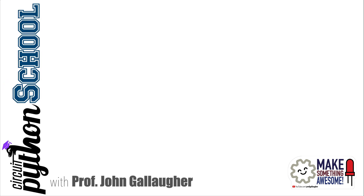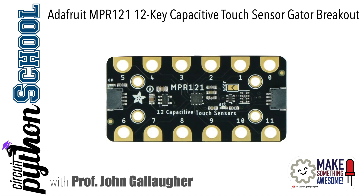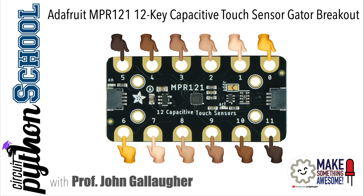Python pals, this is Prof G, and I'm touched that you continue to watch our CircuitPython School videos, which is appropriate because we're about to work with capacitive touch using the Adafruit MPR-121 STEMIQT breakout board, which offers a touchingly large 12 capacitive touch pads, each of which is alligator clip-friendly, and which can sense your capacitive presence or that of any other object that can convey capacitance.